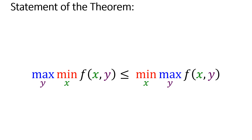The statement of the theorem: the max with respect to y of the min with respect to x of the function f(x,y) is always less than or equal to the min with respect to x of the max with respect to y of the function f(x,y).